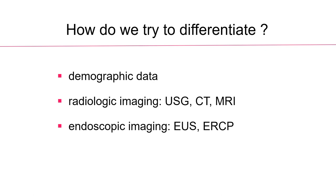Nowadays, we are detecting an increasing number of pancreatic cysts and smaller and smaller lesions. The differential diagnosis of these lesions is quite troublesome. How do we try to differentiate? We are currently using demographic data, radiologic imaging including ultrasound, CT, MRI, and we are adding endoscopic imaging — EUS and ERCP. Even after all these imaging studies, do we have an accurate and specific diagnosis? The answer is no at the current moment.